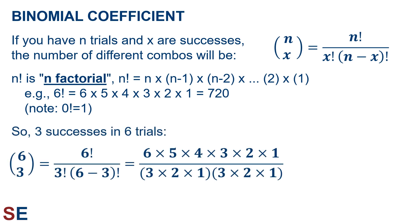Thinking about three successes in six trials, this would be 6 choose 3, which is 6 factorial over 3 factorial times 6 minus 3 factorial. Writing this out gives us 6 times 5 times 4 times 3 times 2 times 1 in the numerator, and 3 times 2 times 1 multiplied by 3 times 2 times 1 in the denominator. A nice feature of fractions with factorials is that lots of cancellation occurs. The 3 times 2 times 1 cancels on top and bottom, and the remaining 3 times 2 times 1 in the denominator equals 6, which cancels with the 6 in the numerator. The whole thing reduces to 5 times 4, which equals 20.